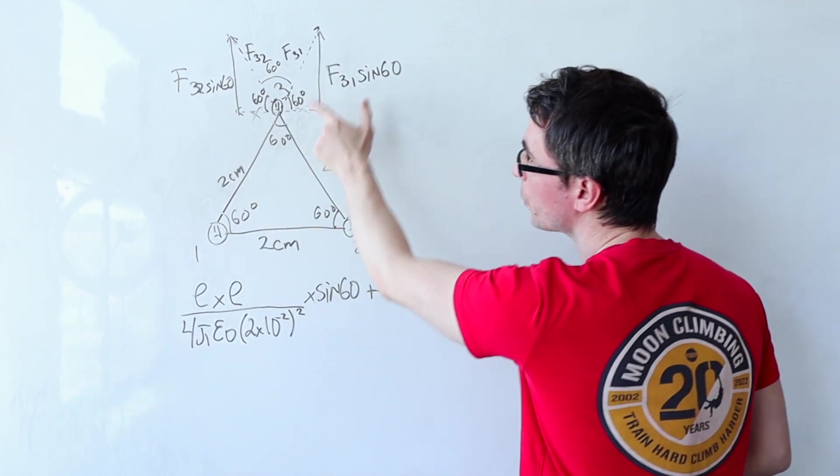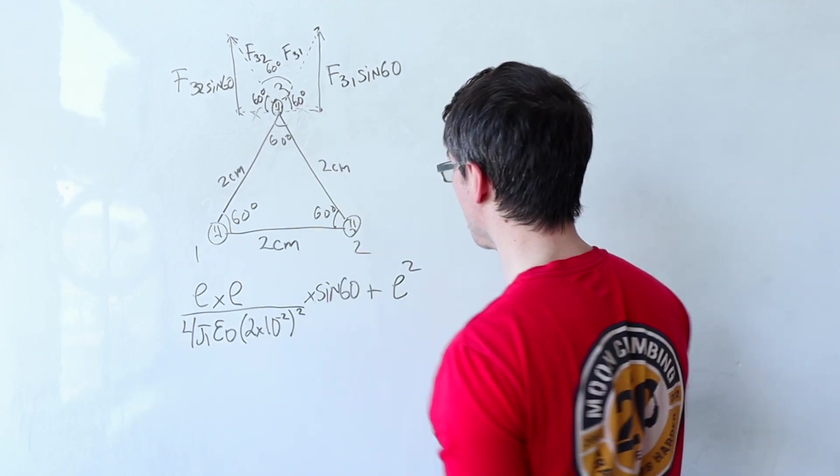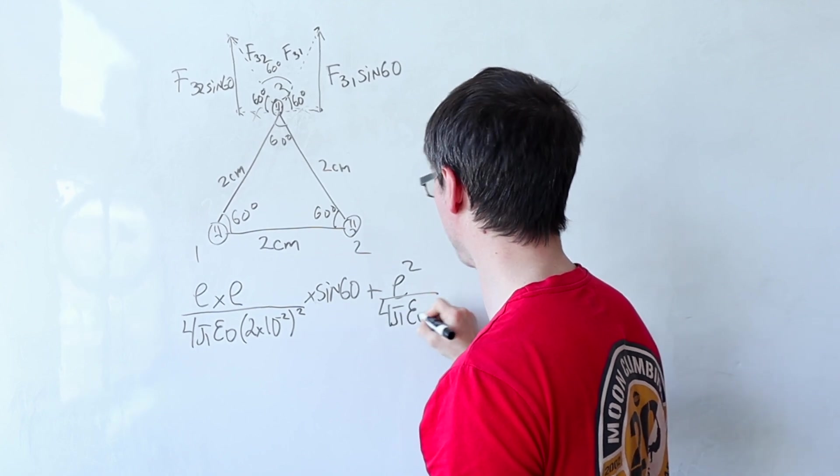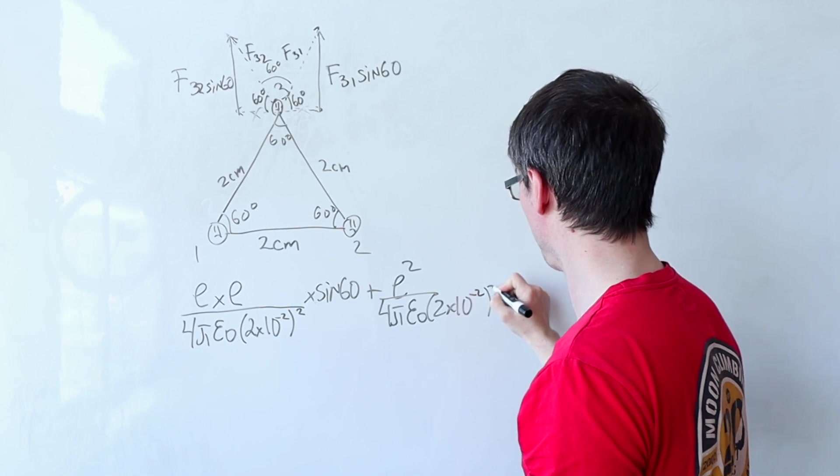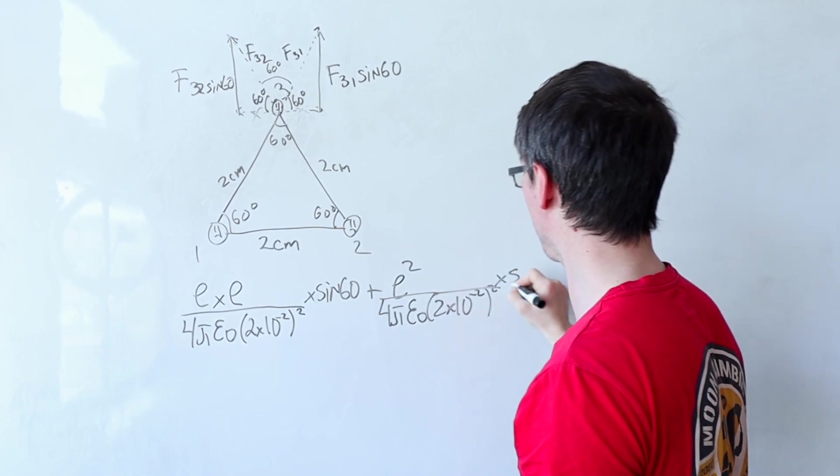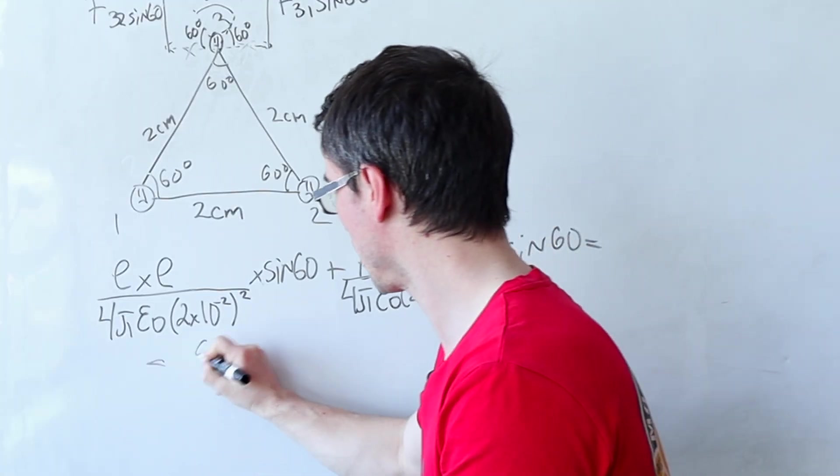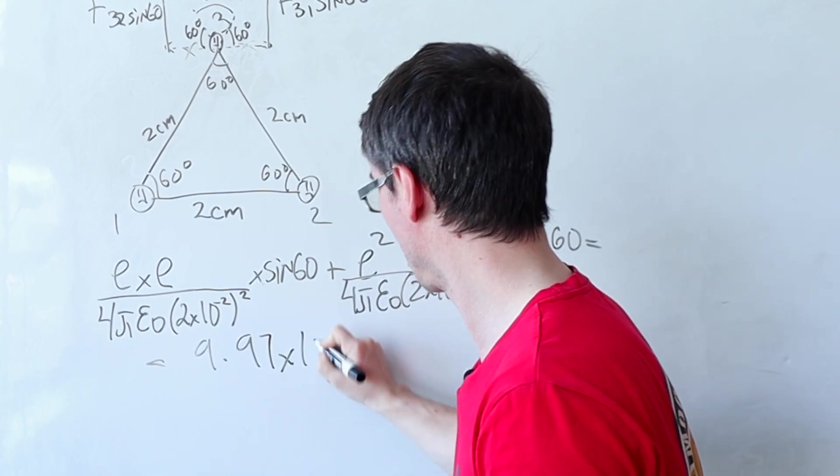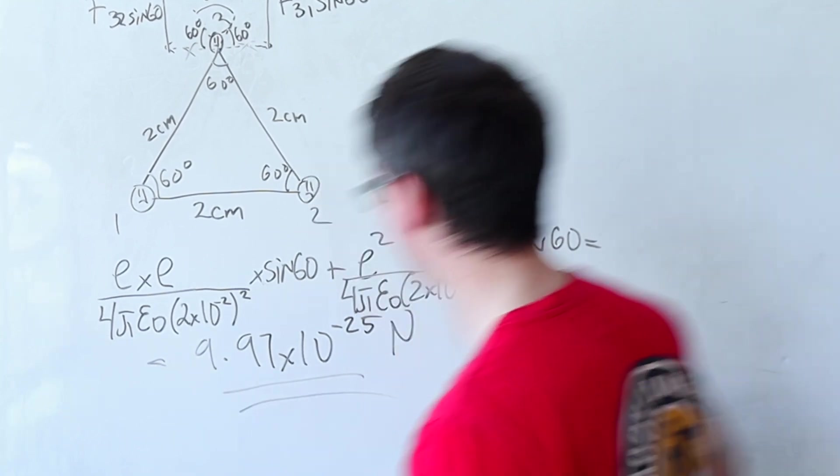The magnitude of this one will also be exactly the same. So this will be e times e which is e squared over four pi epsilon naught two times 10 to the power of minus two squared multiplied by sine of 60. I'm going to get around 9.97 times 10 to the power of minus 25 newtons.